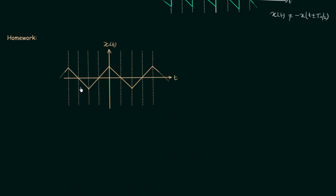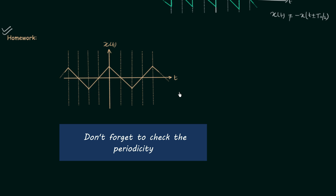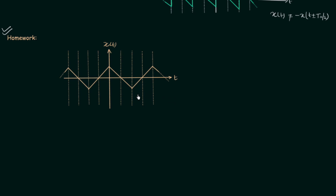In the second problem, you can see the waveform of signal x(t), and this problem is homework for you. Determine whether x(t) is half wave symmetric or not. Follow the same steps: first perform the time shifting by T₀/2 either left or right, then perform the amplitude reversal. If the two waveforms are the same, then x(t) is half wave symmetric. Post your answer in the comment section.